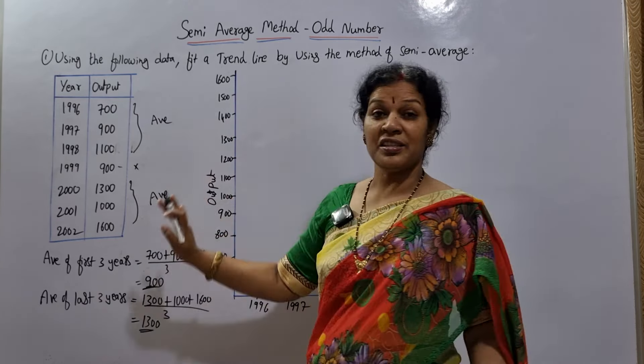For the y-axis scale, first identify the minimum and maximum values. Here the minimum is 700 and the maximum is 1600. You can choose any suitable class interval in between; I have taken 100 as the class interval, starting at 700 and going up to 1600: 700, 800, 900, 1000, 1100, 1200, 1300, 1400, 1500, 1600. That covers the full range of output data.